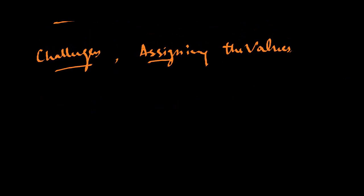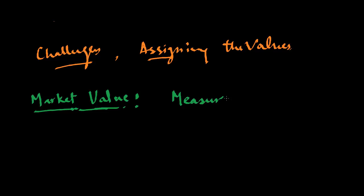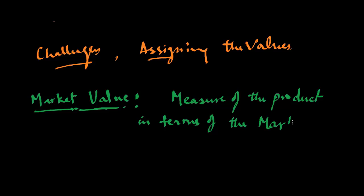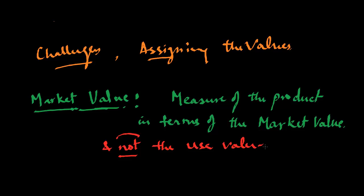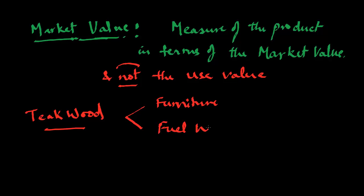We already know the concept of boundary, and now let's consider the market value. The market value is the measure of the product in terms of the value you will get if you sell that product in the market — not the use value or the useful value. For example, if you have teak wood, you can use it in two ways: you can make furniture out of it, or you can use it as fuel wood.